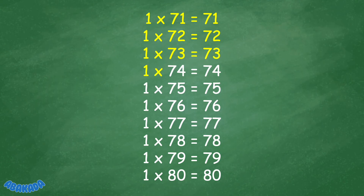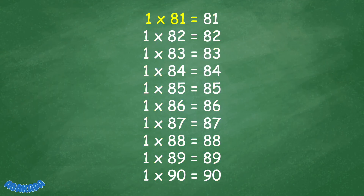1 times 74 equals 74. 1 times 75 equals 75. 1 times 76 equals 76. 1 times 77 equals 77. 1 times 78 equals 78. 1 times 79 equals 79. 1 times 80 equals 80. 1 times 81 equals 81. 1 times 82 equals 82. 1 times 83 equals 83. 1 times 84 equals 84. 1 times 85 equals 85.